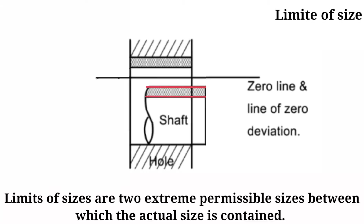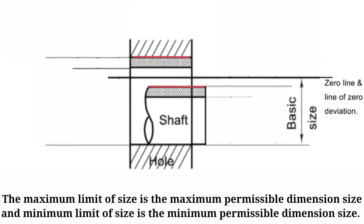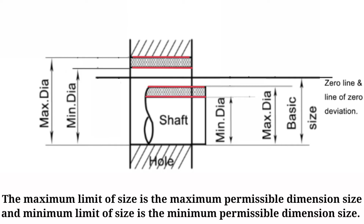Limits of size. The limits of sizes are two extreme permissible sizes between which the actual size is contained. The maximum limit of size is the maximum permissible dimension size, and the minimum limit of size is the minimum permissible dimension size.